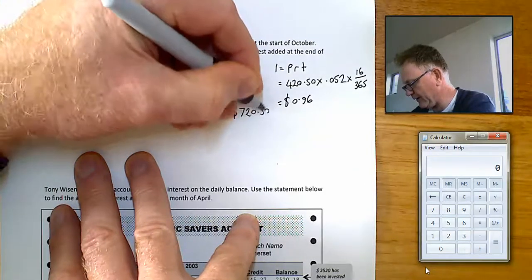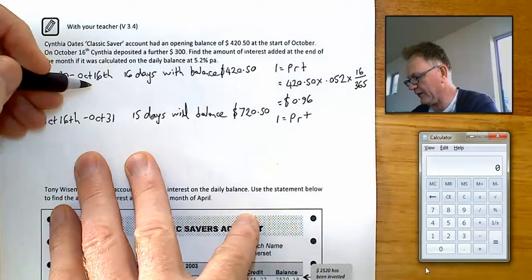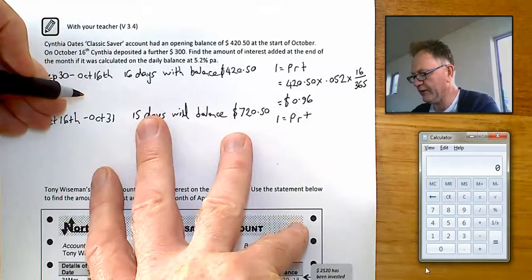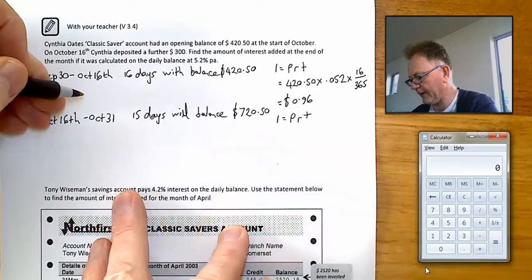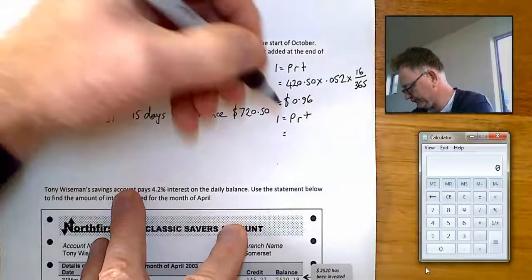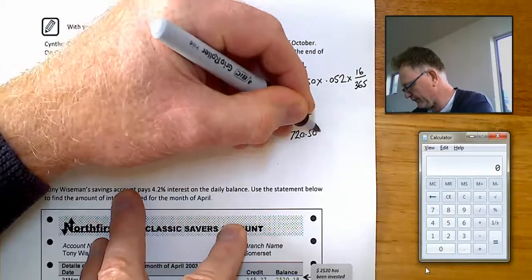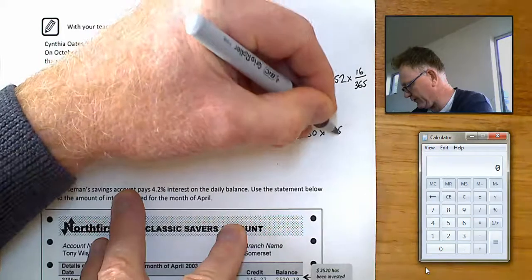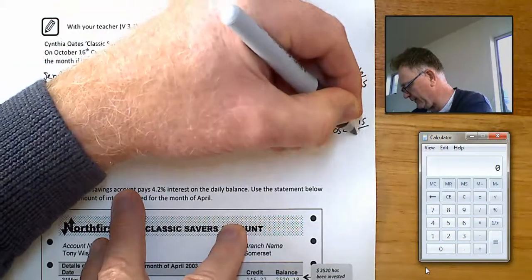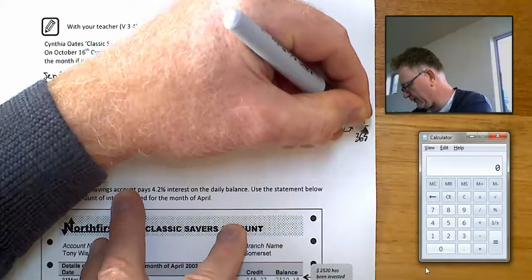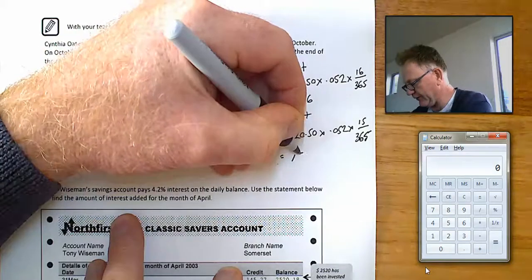You can use I equals PRT again to work out how much interest you should get on this $720.50 for 15 days. Times the interest rate, times 15 days of interest. And using the calculator, it works out to be $1.54.